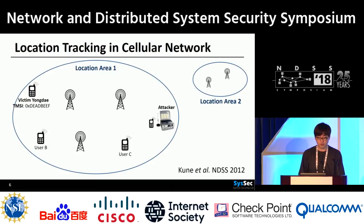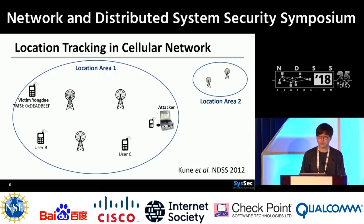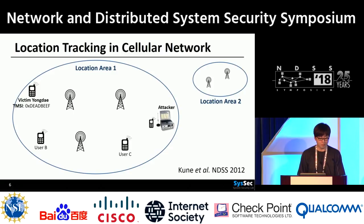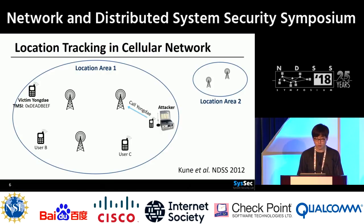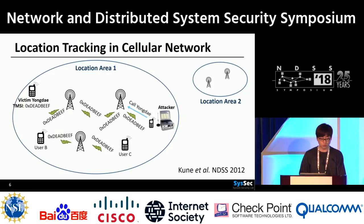In other words, the purpose of these temporary identifiers is to hide the subscriber's identity. However, previous work in this area shows that temporary identifiers still break location privacy. The first work in this area is Yongdae's work at NDSS 2012 against GSM. In GSM, the network did not update the temporary identifier for voice calls. Suppose victim Yongdae has a temporary identifier. In the first step, an attacker calls Yongdae. Note that the attacker cannot know Yongdae's temporary identifier. The network then sends a message to find him across the location area where Yongdae was last located.